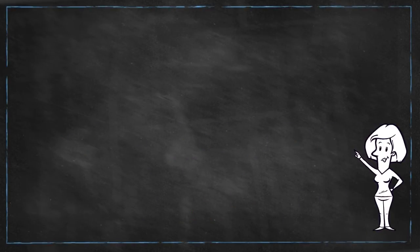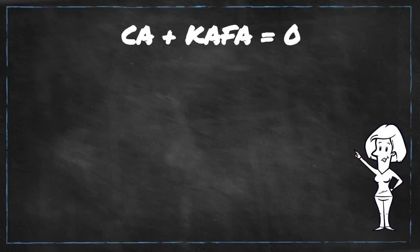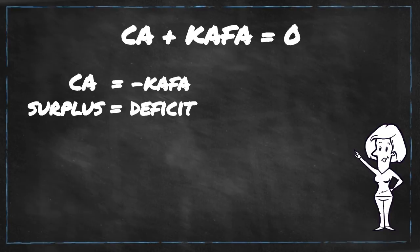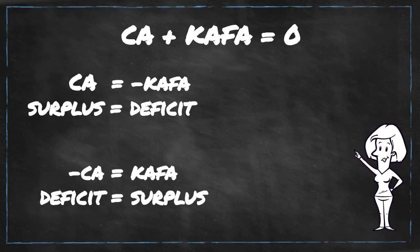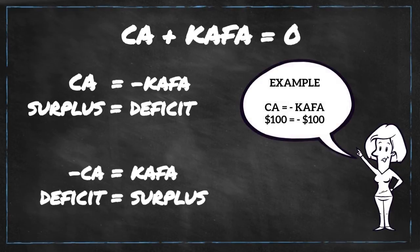Mathematically, what this means is that when one account's value is positive or in a surplus, then the other account must be negative or in a deficit to the same amount — it is in this way that the balance of payments actually balances out. A basic example would be that if the current account was in a surplus of $100, then the value of the CAFA would have to be a deficit of negative $100.